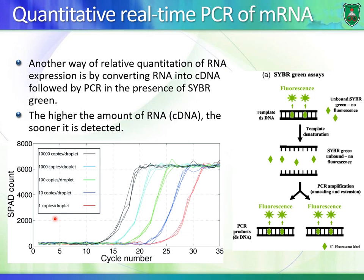The sample with one copy of cDNA as starting material would eventually be detected, but later in terms of number of cycles. So we know that the black sample contains more starting material than the blue sample, and the blue contains more than the green. The black sample, for example, has more gene expression of this particular gene we are testing, and the second sample has the second highest level of messenger RNA or cDNA, and so on.